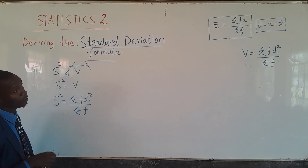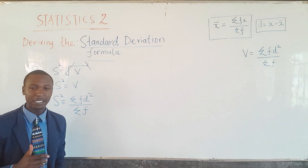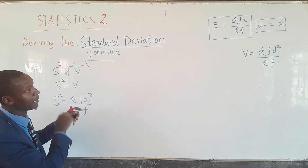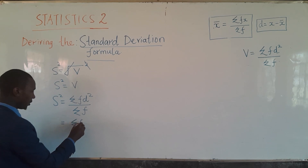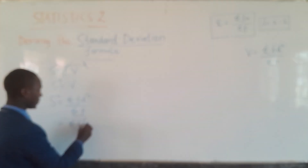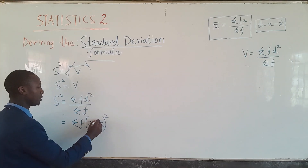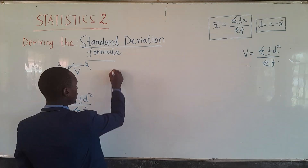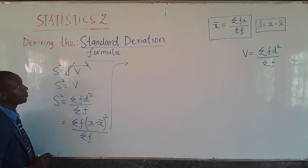We notice that we have d² here, and d is the deviation from the mean. We can replace d with what it is: d equals x minus x-bar. After doing that, we have s² equals summation of f times (x minus x-bar)² divided by summation of f.